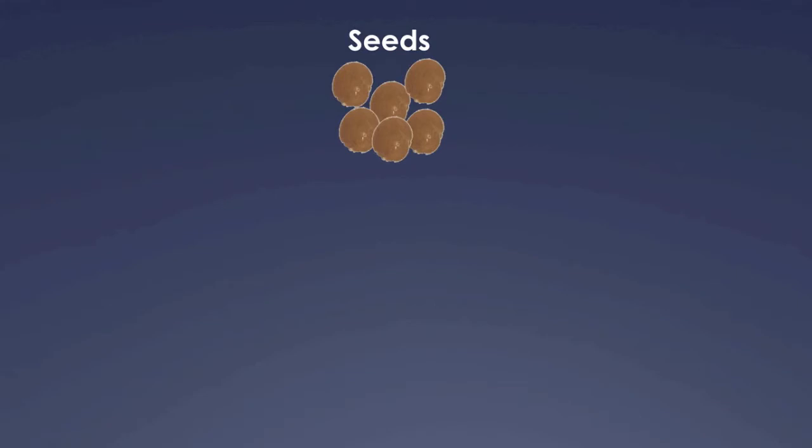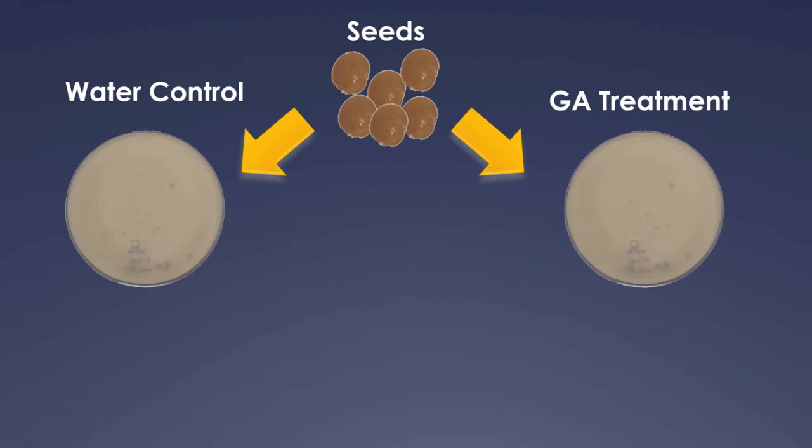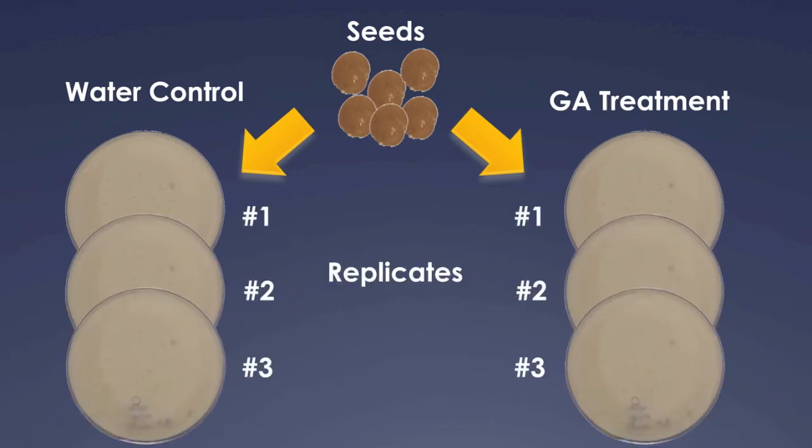At this point, your experimental design should look as follows. Each seed genotype should have been evenly split between your water control and your gibberellic acid treatment. If possible, you should have also done at least three replicates of each of these treatments in order to perform statistical analysis in your results after you're done collecting your data.